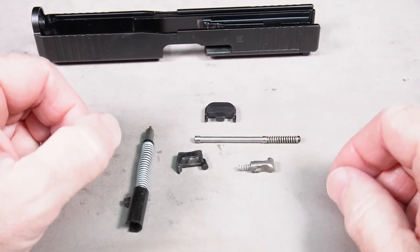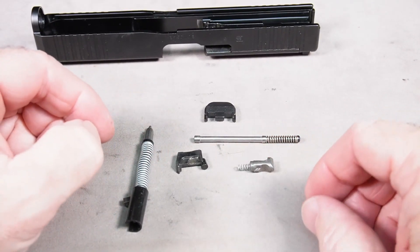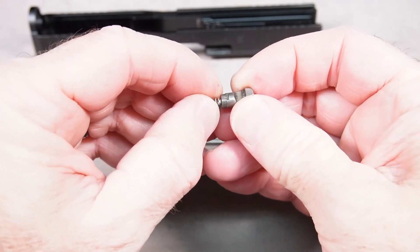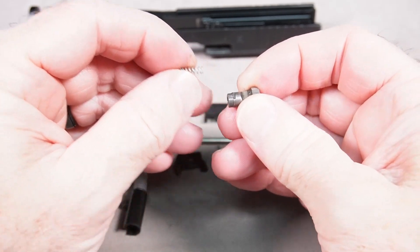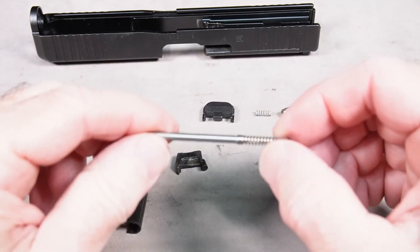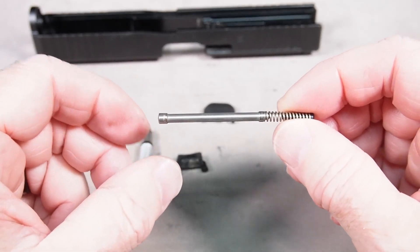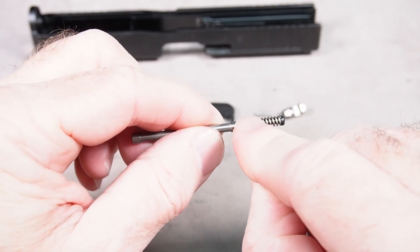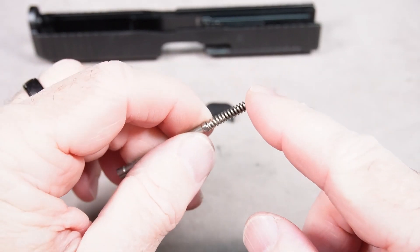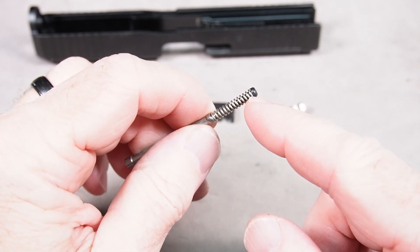Now if you want to go one step further and take all these pieces apart, we can do that. So this is the extractor and the spring just pulls right out of that. This is the extractor depressor plunger, and the extractor depressor plunger spring. And this black piece here is called the spring loaded bearing.